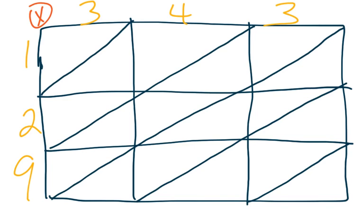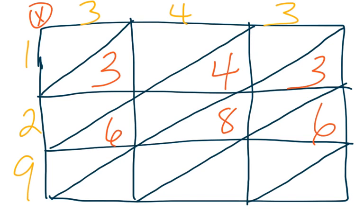1 times 3 is 3. 1 times 4 is 4. 1 times 3 is 3. 2 times 3 is 6. 2 times 4 is 8. 2 times 3 is 6. 9 times 3 is 27. 9 times 4 is 36. And 9 times 3 is 27.